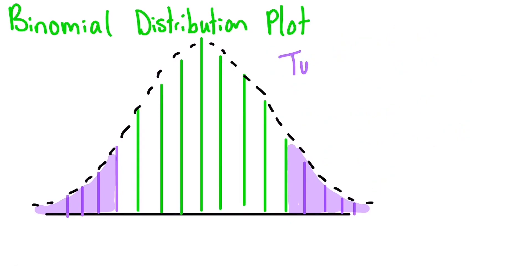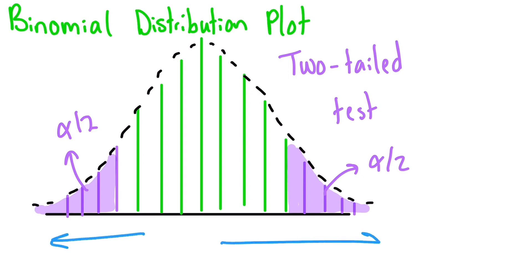Just remember that the area of the critical region is still the same area as our significance level, alpha, so if we do a two-tailed test, it has to fall further away from the middle of the curve for us to consider it statistically significant.